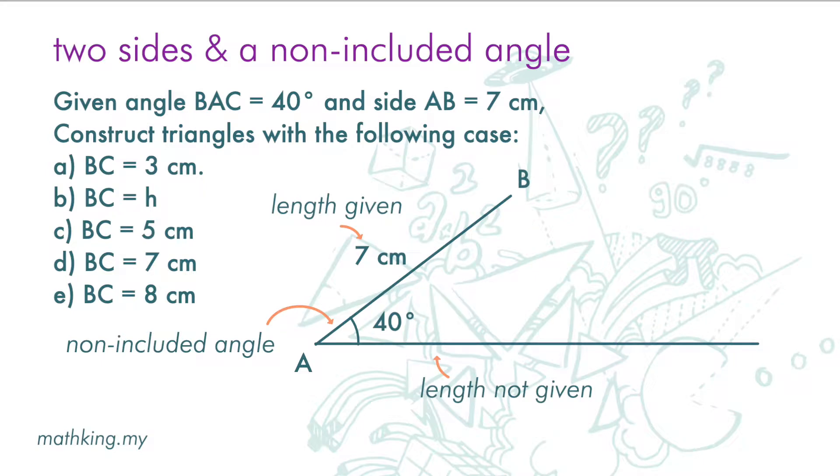If BC is 7 cm, same as the side here, we get an isosceles triangle. We can get only one triangle with the information provided.